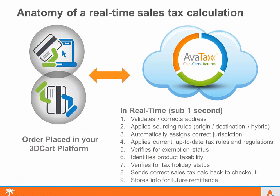Our solution in 3D Cart validates the address, applies all correct sourcing rules — whether destination or origin based, which varies from state to state. It applies the appropriate jurisdictional taxes, all up-to-date rate and rule data, verifies if the customer is exempt, and handles product taxability. For example, clothing and apparel with 3D Cart customers: in New York City, if an item is under $110 it's tax exempt; if it's over $110, it's fully taxable. We've got the logic to support that, plus tax holidays.